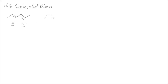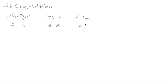I can have a conjugated diene where this one is Z and this one is Z — a ZZ configuration. Or I can have it mixed where one of them is Z and one of them is E.